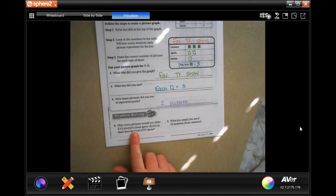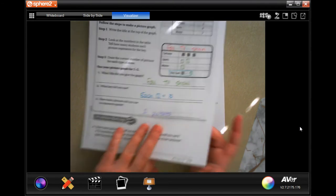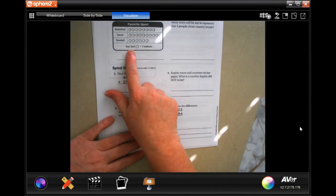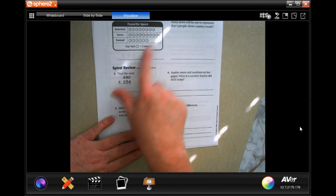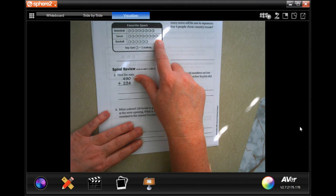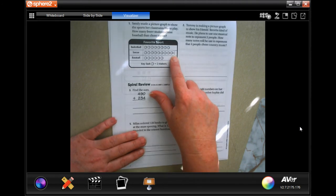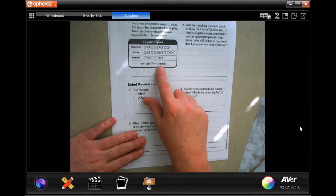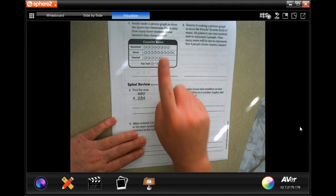You guys are going to go down and do the problem solving. You are also going to do the lesson check on the back. Make sure that you look at the key when you're counting. So this one says that each circle is worth two students. Notice there's a half of a circle there. Half of a circle is half of two, which is only one.